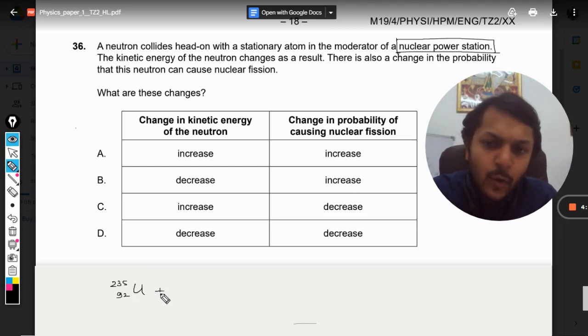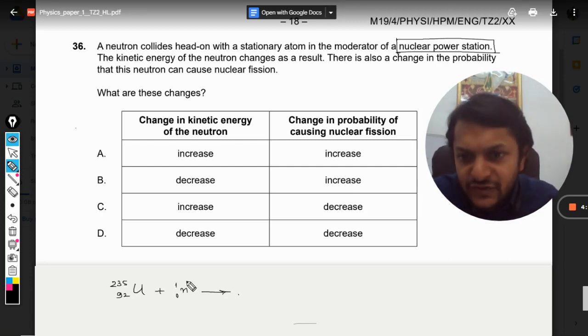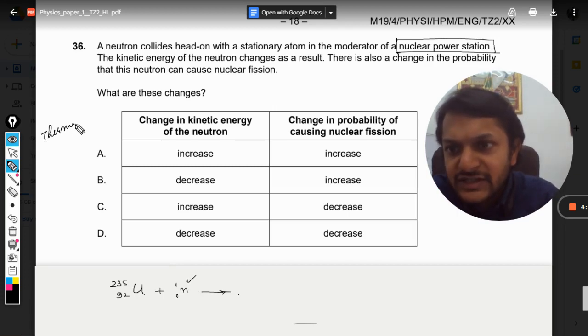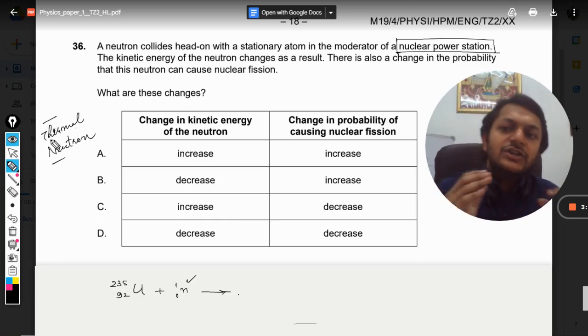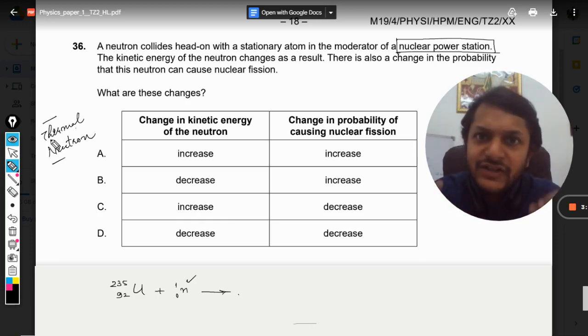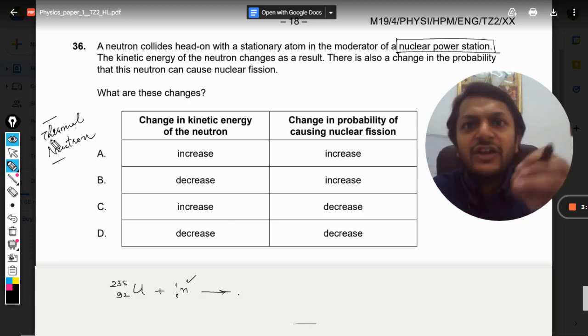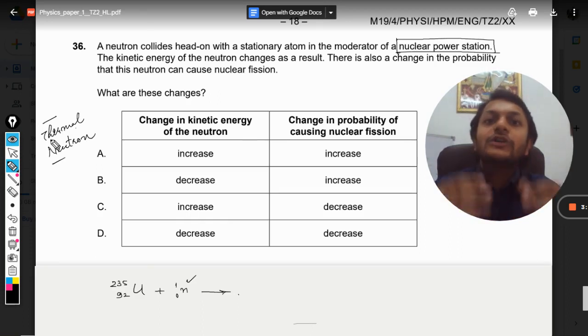it just needs one neutron to create a fission reaction. So it needs one neutron, but this neutron is known as thermal neutron. These neutrons which cause this kind of a reaction, they have been given a new name that is thermal neutron. So these are those slow moving neutrons which are able to penetrate into the uranium atom and cause a fission reaction.